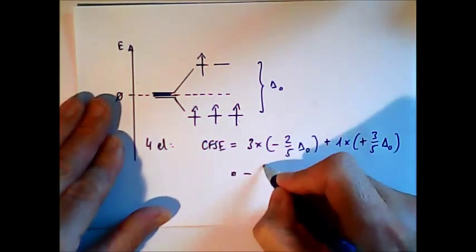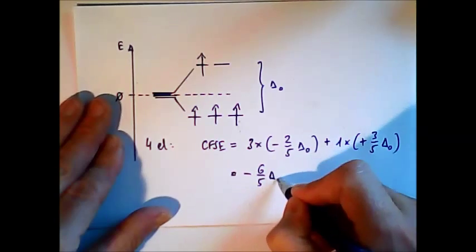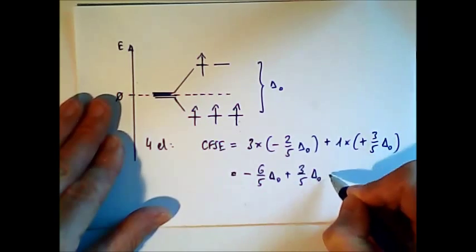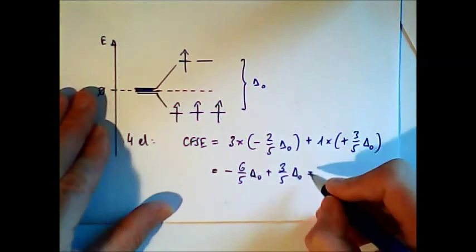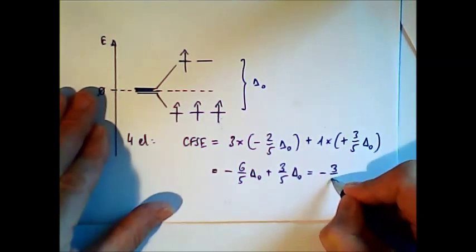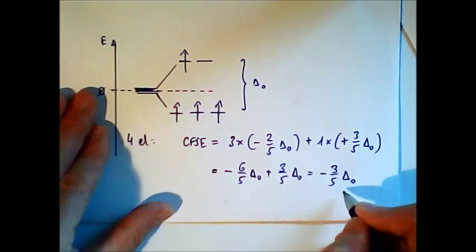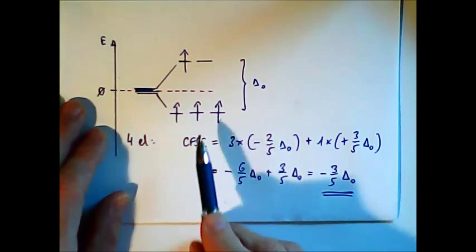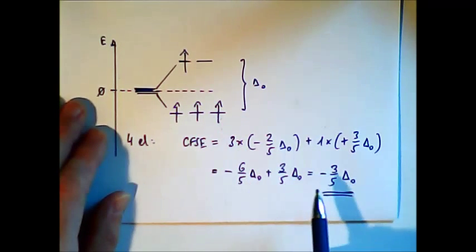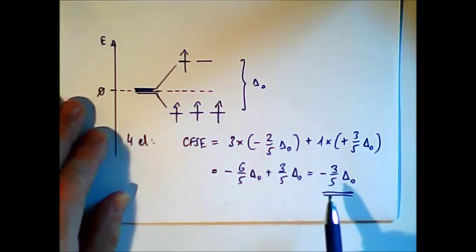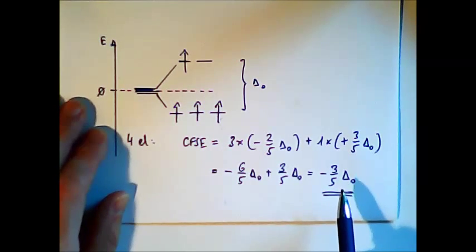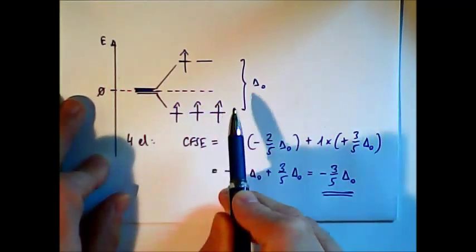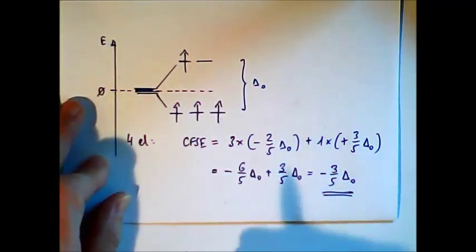Altogether that gives minus 3 over 5 delta-O. This is the crystal field stabilization energy in the 4-electron high spin case. When we compare to 3 electrons, this energy is higher — in other words, this system is not as stable as the one that has only 3 electrons.